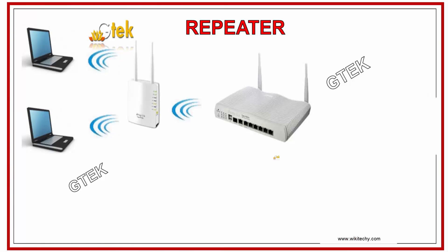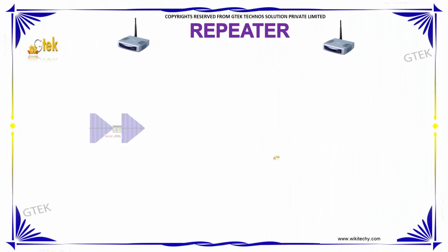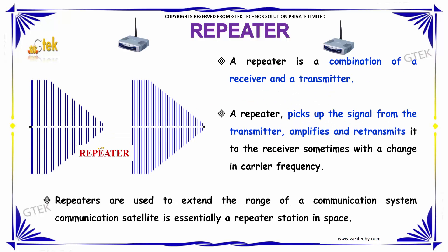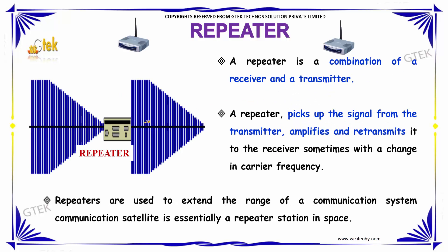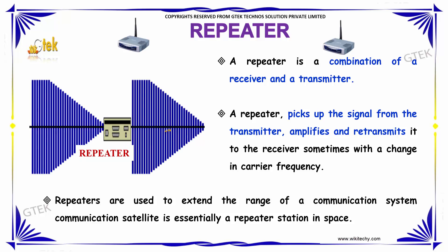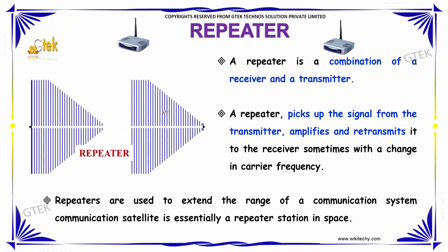A repeater — what is it? A repeater is a combination of a receiver and a transmitter. A repeater picks up the signal from the transmitter, amplifies the signal, and retransmits it to the receiver, sometimes with a change in carrier frequency. Repeaters are used to extend the range of a communication system.